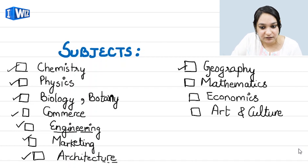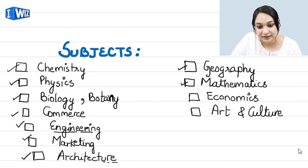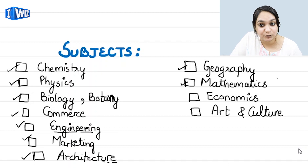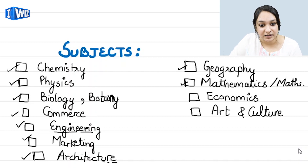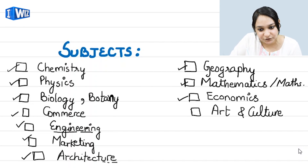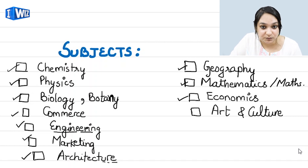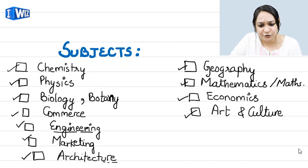After mathematics comes economics — there is a very minor difference in pronunciation, but keep in mind the word is 'economics'. After that: art and culture. Now friends, all these words are not the end of the list — this is not an exhaustive list.